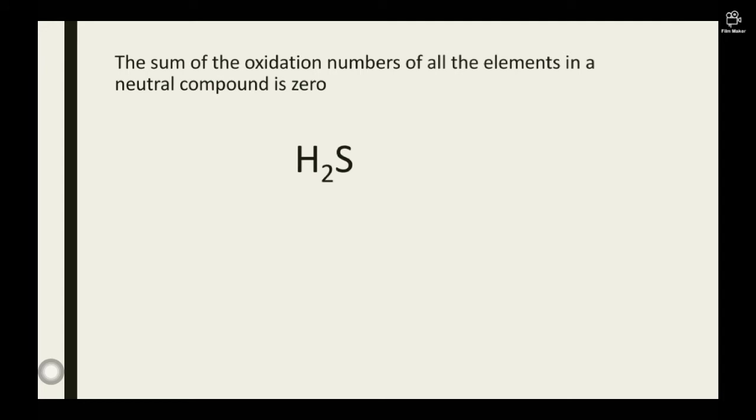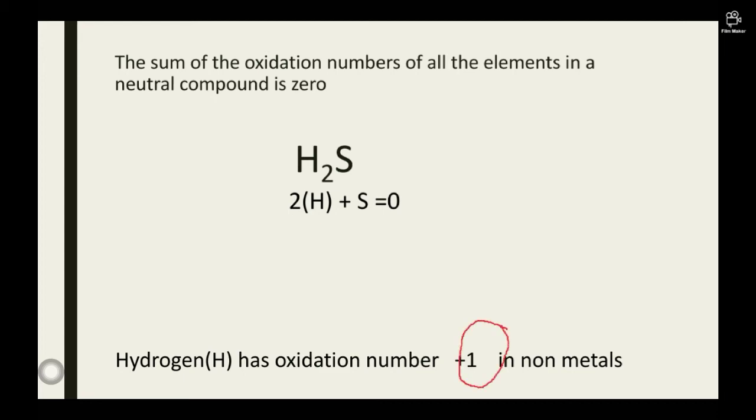Let's do some calculation with that particular law. Consider this compound H2S. In calculating for the oxidation number of H2S, we add two atoms of hydrogen to a single atom of sulfur. It is equated to zero because this compound is a neutral compound. The oxidation number of hydrogen is plus 1 in metals. So by substituting this, we end up getting 2 into bracket 1 plus S equals zero. Further solving, S becomes negative 2.